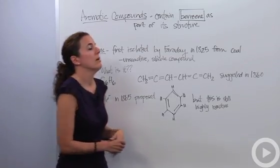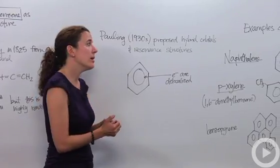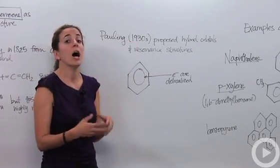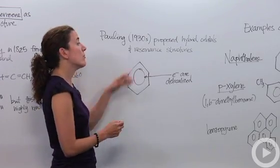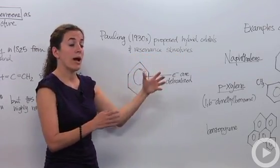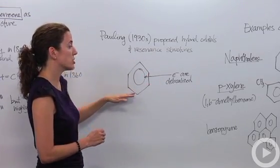Pauling was doing other things within chemistry and he actually discovered in 1930 - he proposed this idea of hybrid orbitals and resonant structures. Resonant structures are when electrons are not fixed, they're actually delocalized amongst the structure.